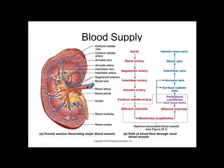Those cortical radiate arteries are too small to see — they feed into the nephron, the functional unit of the kidney. We go from afferent arteriole → glomerulus → efferent arteriole → peritubular capillaries and vasa recta. Venous drainage mirrors arterial supply: cortical radiate veins → arcuate veins → interlobar veins → renal vein → inferior vena cava. The only difference is there is no segmental vein.